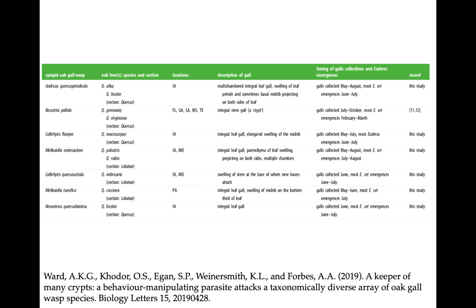Anna Ward and Andrew Forbes collected more than 23,000 galls from 100 oak gall wasp species, and they found the crypt keeper wasp infecting six additional host species. The original host we discussed, two closely related wasps, and other wasps in more distantly related genera — so the crypt keeper wasp is able to both infect and manipulate a diverse group of hosts, and all of these hosts did the head-plugging behavior.